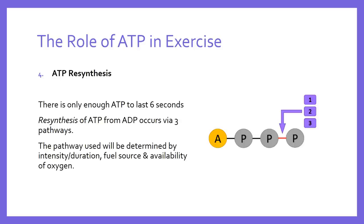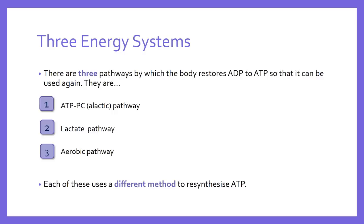The body has a choice of three pathways, which we know as the energy systems. The first is the ATP-PC pathway — the first way the body might restore ATP from ADP so that it can be re-used. This is sometimes called the alactic pathway because no lactate is produced. Secondly, the body can use the lactic acid or lactate pathway. And thirdly, the body can use the aerobic pathway. Each of those systems uses a different method to reattach that phosphate and re-synthesize ATP. We'll look at each in turn in later videos.